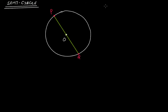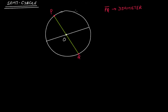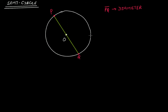This is a special kind of chord, and this chord is a diameter because it passes through the center of this circle. So PQ is a diameter. There can be as many diameters as you want — you can draw it like this, or like this. All of these are diameters.